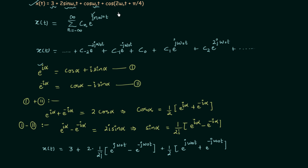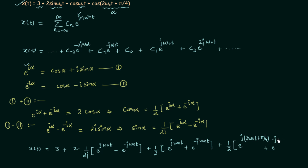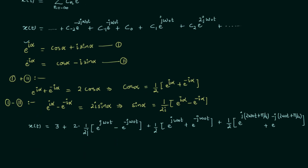Now we move to the last term, which contains cos of 2 omega0t plus pi by 4. This whole angle including the phase is equal to alpha, so we use the cosine formula and write 1 divided by 2 inside the bracket e raised to power j times 2 omega0t plus pi by 4, plus e raised to power minus j times 2 omega0t plus pi by 4.